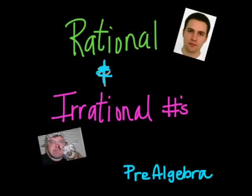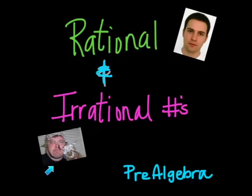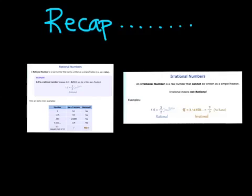Today in class we started talking about rational and irrational numbers. Just like people who act rational — you can predict what they're going to do because they have normal behaviors — we can apply that to numbers. If people act irrational, or kind of spastic, and you can't predict what they're going to do, that also can apply to numbers, because numbers can be irrational.